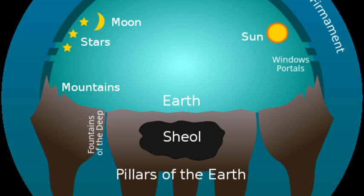In Genesis 1:7, God made the firmament and placed some of the waters above it — above the dome — and below, which are our oceans. The Lexham Translation says: so God made the vaulted dome, causing a separation between the waters under the vaulted dome and the waters over the vaulted dome. I think 'above' here means surrounding the firmament, forming a perfect circle of water all the way round.